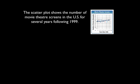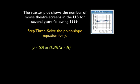Well, that was step 2. Let's look at step 3. Step 3 is to solve the point-slope equation for y. So let's do that. Here's what we came up with: y minus 38 is equal to 0.25 times x minus 6.